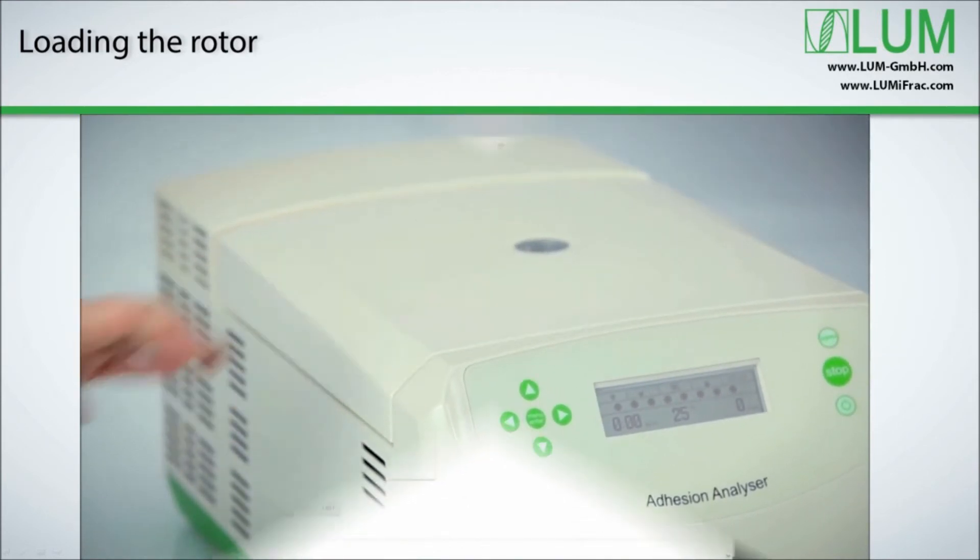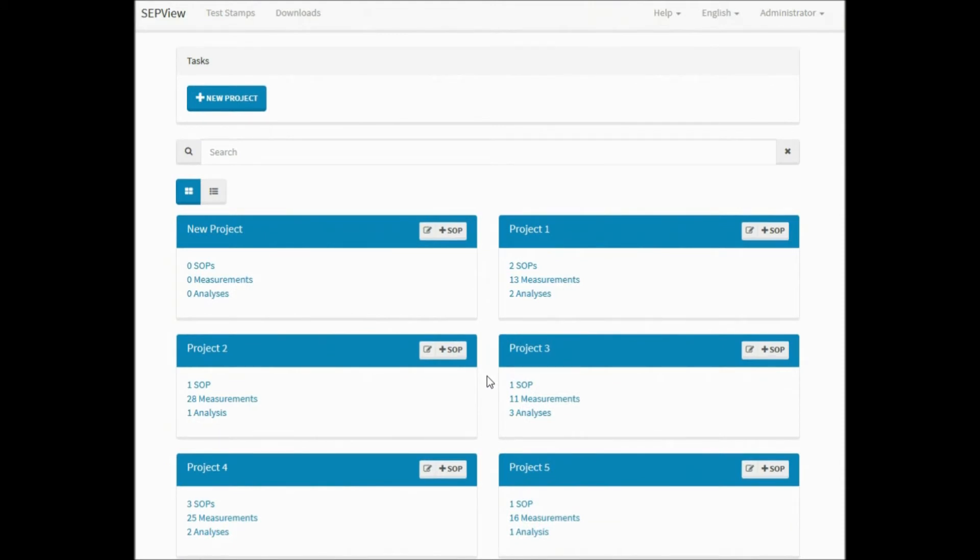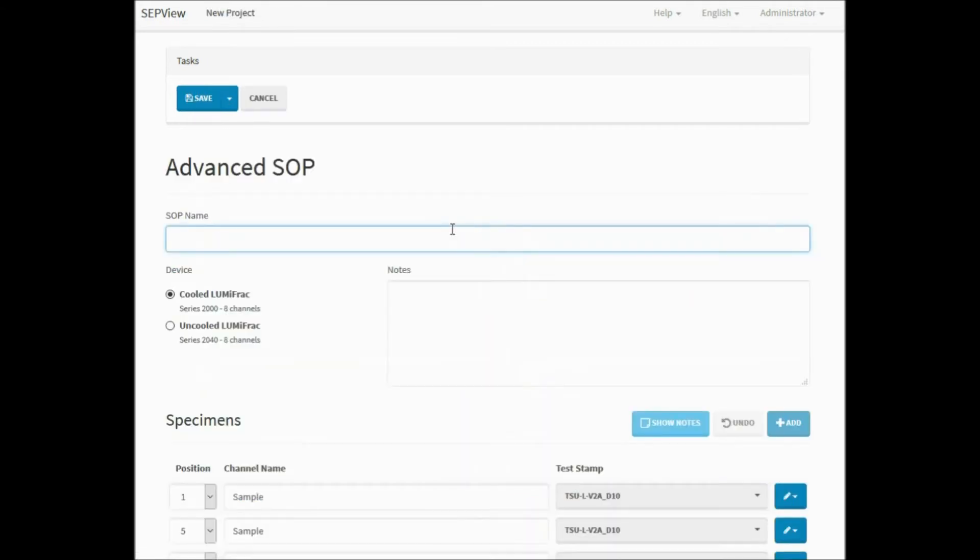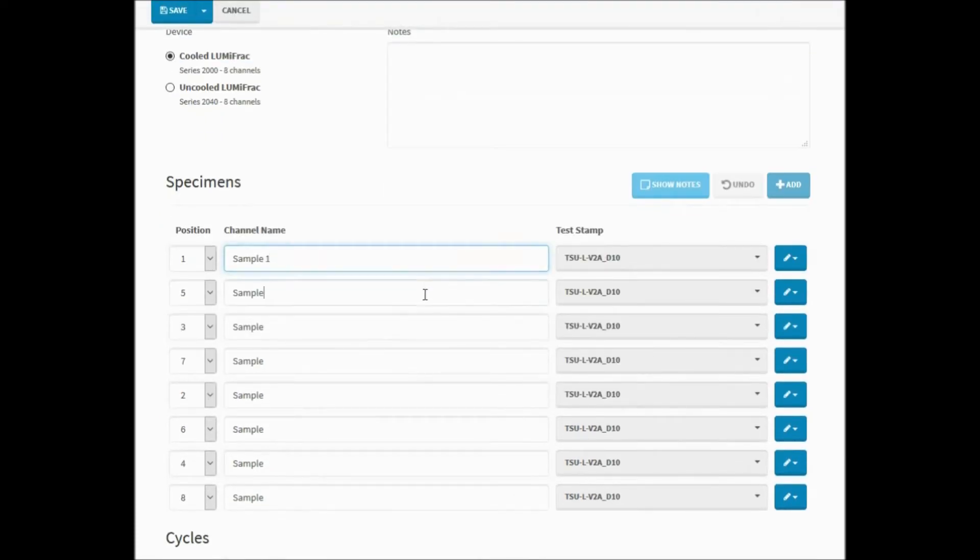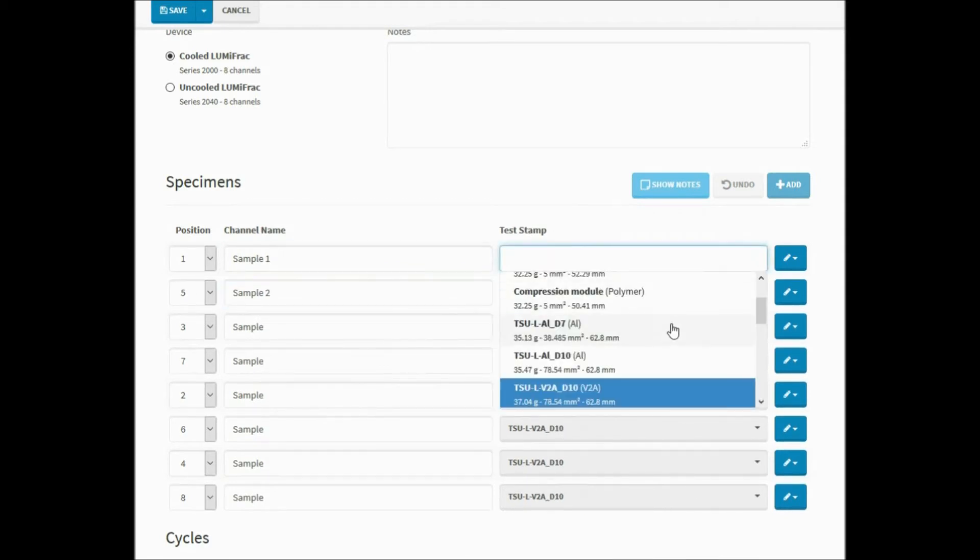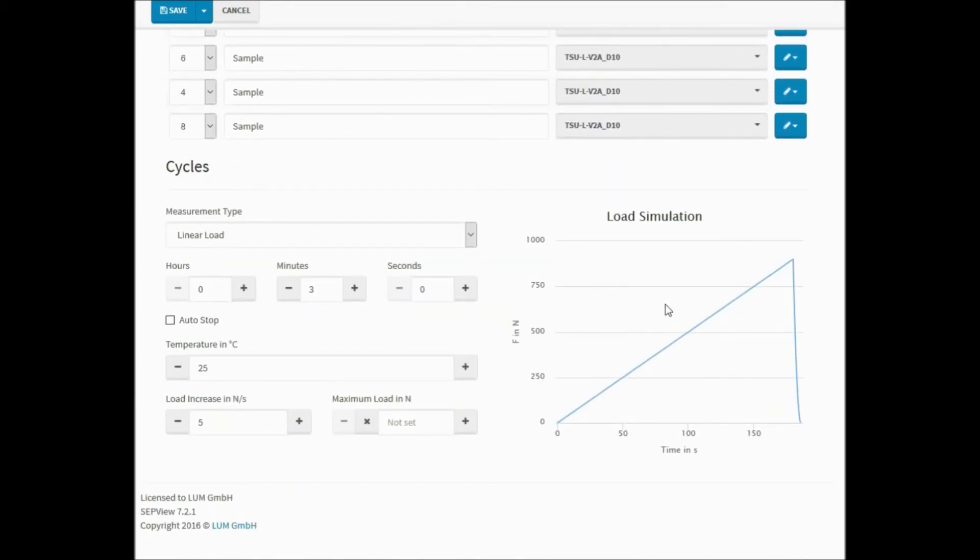We then start the physical measurement and simultaneously open the SepView software on our computer. Create a new SOP by clicking on the corresponding buttons. The SOP wizard opens to conduct the necessary settings. Name the SOP, then enter the names of your samples and select the test stamps to be used. Predefined test stamps can be selected by clicking on a drop-down menu. Measurement parameters are operational defaults of the analytical centrifuge. They depend on materials used, like different types of adherents and adhesives. The four measurement types allow for two kinds of standard short-term testing as well as two special long-term measurement options.